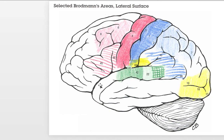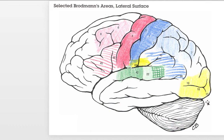In the temporal lobe, areas 41, 42, and 22 are all important for auditory function. Areas 40 and 39 are present in the parietal lobe, along with areas 5 and 7, which are attributed to somatosensation, body area, and position of the body in space. In the occipital lobe, areas 19, 18, and 17 are important for functioning of the visual cortex.